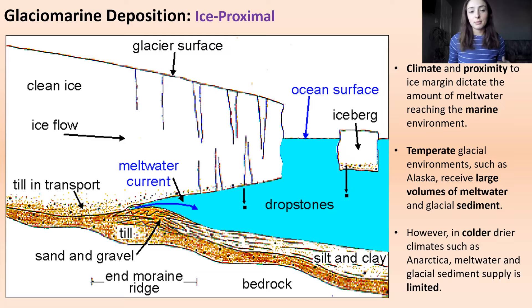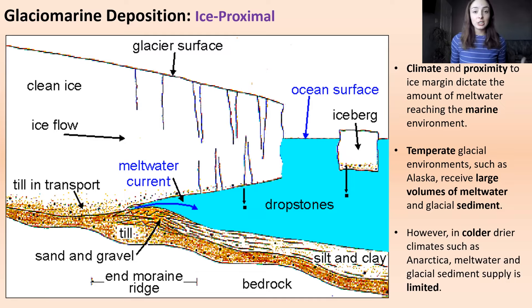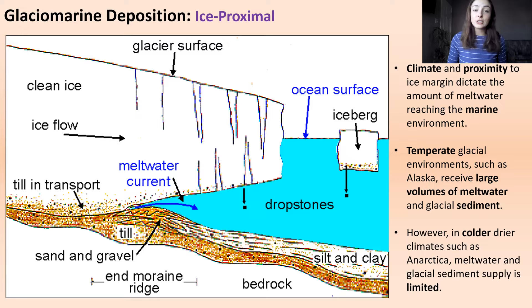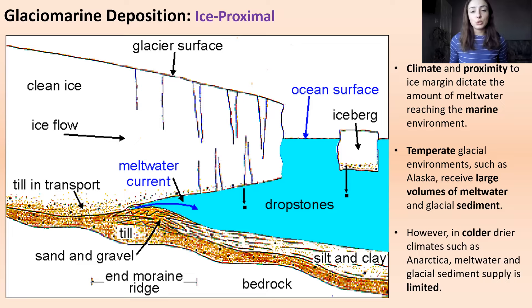In glacial marine depositional environments, climate and proximity to the ice margin dictate the amount of meltwater reaching the marine environment. You might expect areas with more glaciers to have more glacial marine deposits, but that's not the case. Colder, drier climates like Antarctica, which has tons of ice, don't cause much glacial marine deposition because there's not a lot of melting. In contrast, temperate glacial environments like Alaska have large amounts of meltwater reaching the basin. The more temperate and seasonally variable the climate, the more deposition occurs.